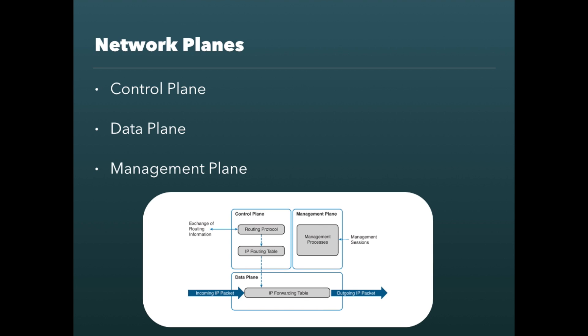The routing table, for example, that is built by the routing protocol will be pushed into the data plane and the IP forwarding table that exists there. The data plane, on the other hand, is where the actual data is being forwarded. For enterprise network devices, this would be forwarding in hardware using ASICs, creating fast performance for moving packets in and out of the network device.